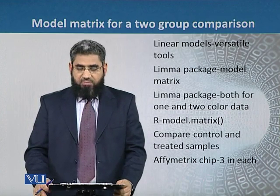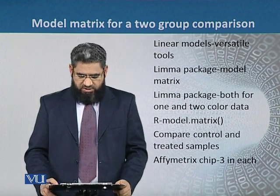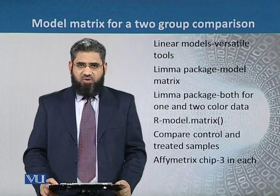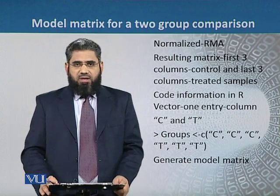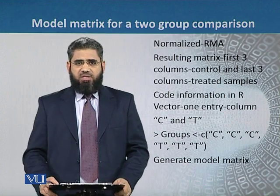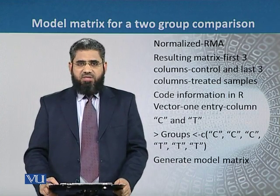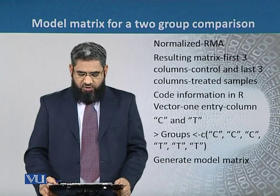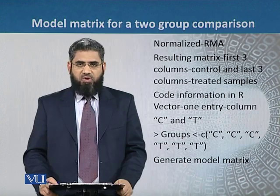We assume that we are comparing control and treated samples using the Affymetrix chips, and there are three samples for the control and three samples for the treated group. After running the Affymetrix experiment, we have to do normalization using the RMA method. The resulting matrix produced after normalization will have the first three columns for the control experiment and the last three columns for the treated samples.